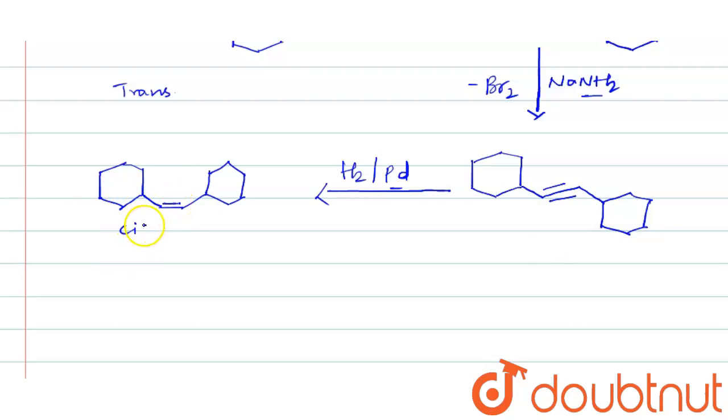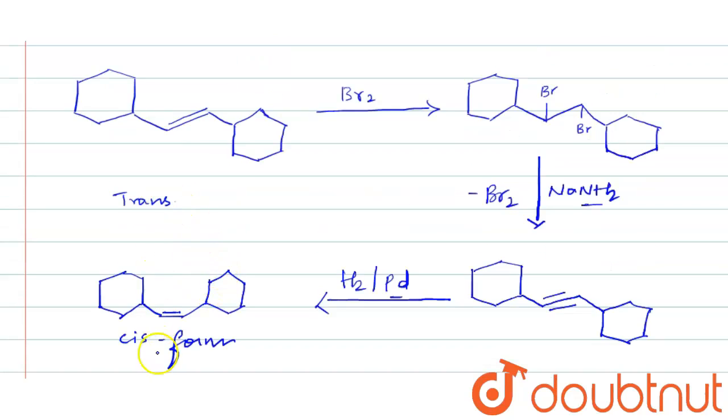This is our final product, that is cis form. So we have converted the trans form into cis form by using the reagents Br2, after that sodium amide or sodamide, and after that reduction using hydrogen and palladium catalyst.